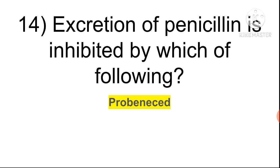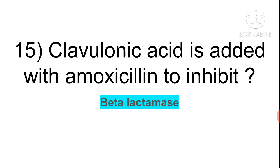Question fourteen: excretion of penicillin is inhibited by probenecid — both are excreted at the same channel. Clavulanic acid is added with amoxicillin to inhibit beta-lactamase. This combination is available in the market as Augmentin. So clavulanic acid inhibits beta-lactamase.